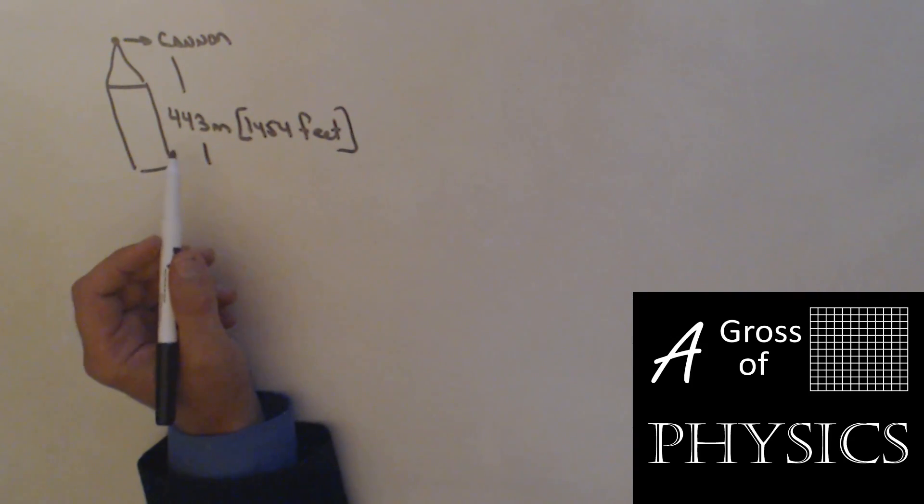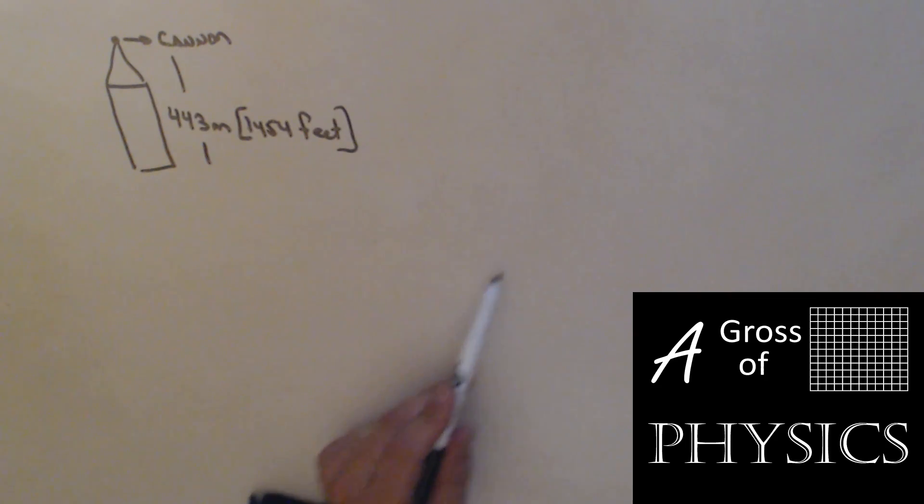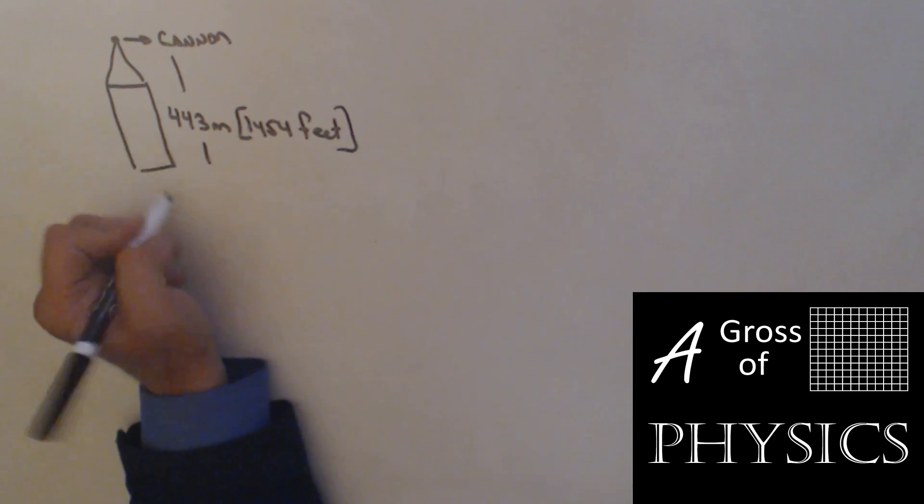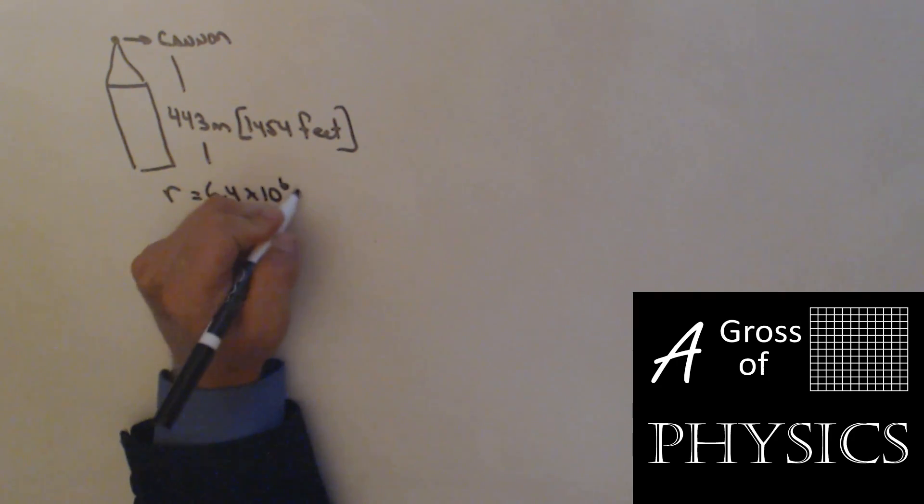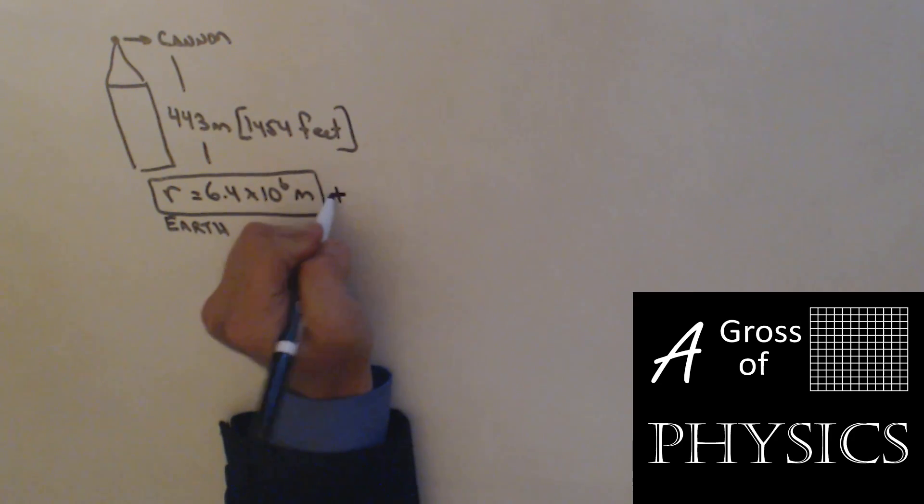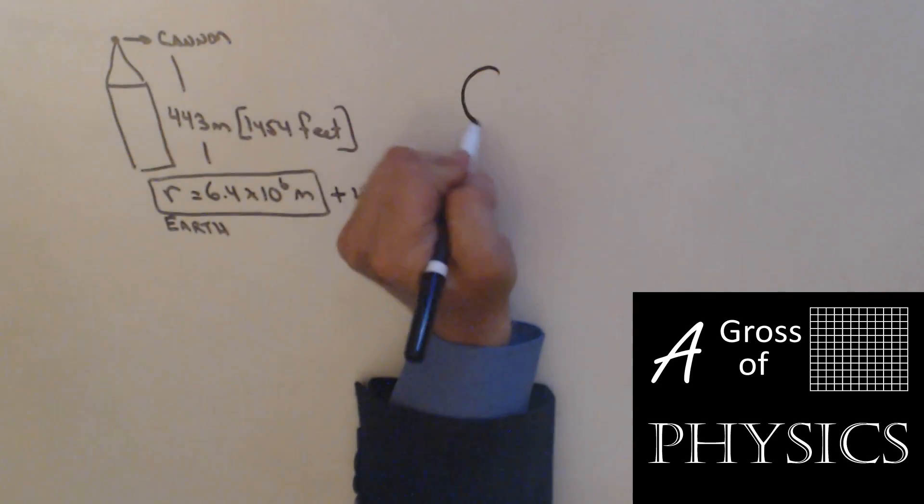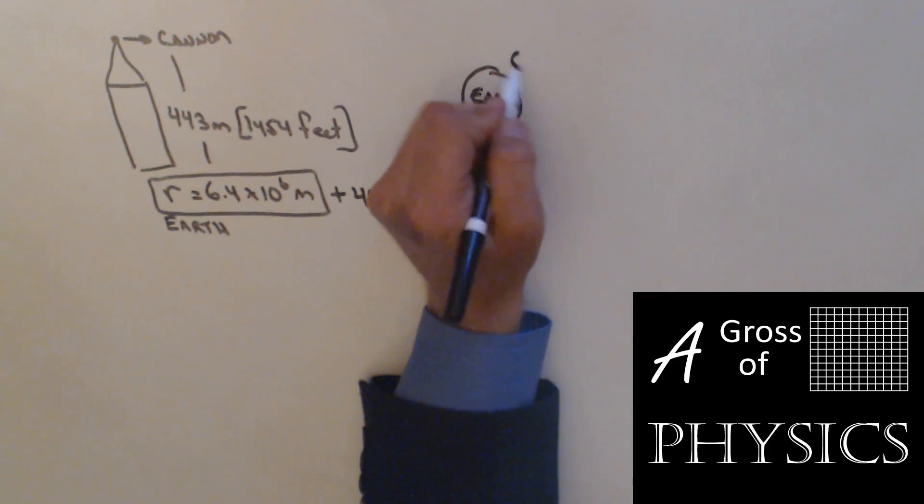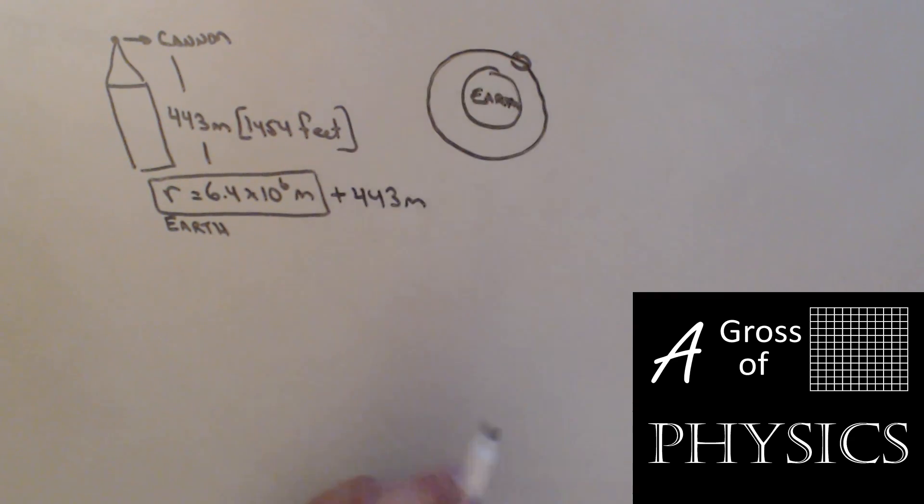All right, we're going to look at a cannon firing a cannonball from the top of the Empire State Building. And it's going to make an orbit around the Earth and then come back. Now if the cannon is fired from that height, what we need to do is determine how far away it is from the center of the Earth. Now the radius of the Earth is 6.4 times 10 to the 6 meters. So that's the radius of the Earth. And that means the radius of the cannon is going to be 6.4 times 10 to the 6 meters plus 443.